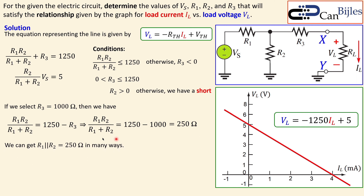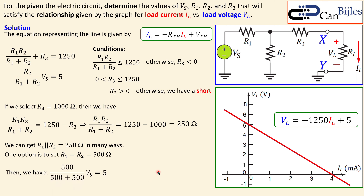A fast approach is to set R1 and R2 equal to each other. Two equal-valued resistors in parallel give half the individual value, so using 500 ohms each gives 500 divided by 2, which is 250 ohms. Now, since we know R1 and R2, we can use equation one: 500 over (500 plus 500) times VS equals 5, which simplifies to one-half times VS equals 5, so VS equals 10 volts.